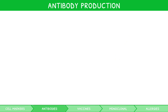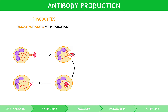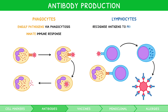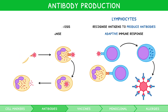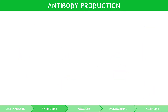We previously introduced how phagocytes engulf pathogens by phagocytosis, part of the innate immune response. We also discussed how lymphocytes recognize antigens to produce antibodies, part of the adaptive immune response. However, at higher level, we must first expand on this generation of antibodies, as it is a multi-stage process. Let's cover it.